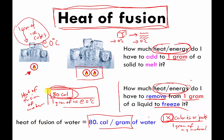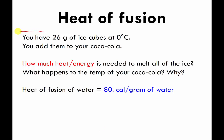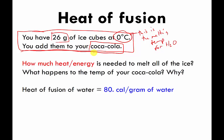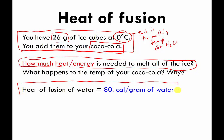For different substances it'll be a different number. Don't memorize these numbers — they'd be given to you on a quiz or test — but you should understand that heat of fusion values tell you how easy or difficult it is to melt or freeze something, and specifically how much energy it takes. It's written as energy per one gram of the material. Here's an example: you have 26 grams of ice cubes at zero degrees Celsius — the melting temperature for water. How much energy is needed to melt all of the ice? The heat of fusion of water is 80 calories per gram. The second question: what happens to the temperature of the Coca-Cola and why?